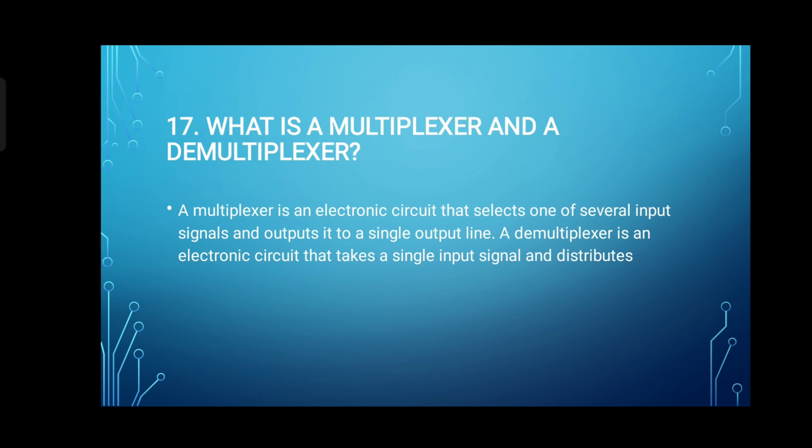17. What is a multiplexer and a demultiplexer? A multiplexer is an electronic circuit that selects one of several input signals and outputs it to a single output line. A demultiplexer is an electronic circuit that takes a single input signal and distributes it to multiple output lines.